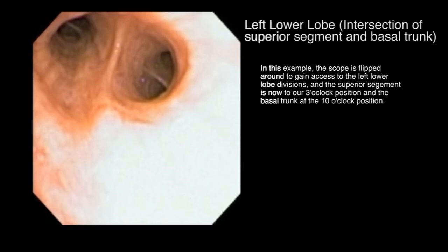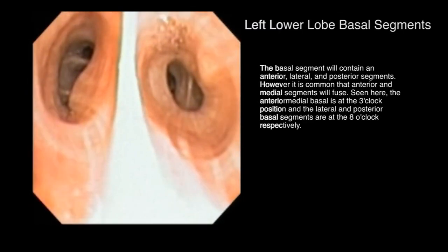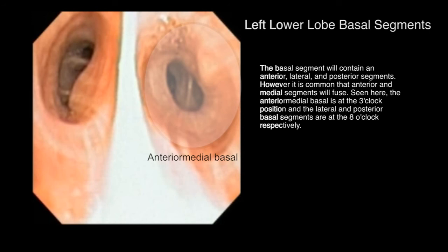In this example, the scope is flipped around to gain access to the left lower lobe divisions. The superior segment is now at our 3 o'clock position and the basal trunk at the 10 o'clock position. The basal segment will contain an anterior, lateral, and posterior basal segment. However, it is common that the anterior and medial segments will fuse. Seen here, the anterior medial basal is at the 3 o'clock position and the lateral and posterior basal segments are at the 8 o'clock position respectively.